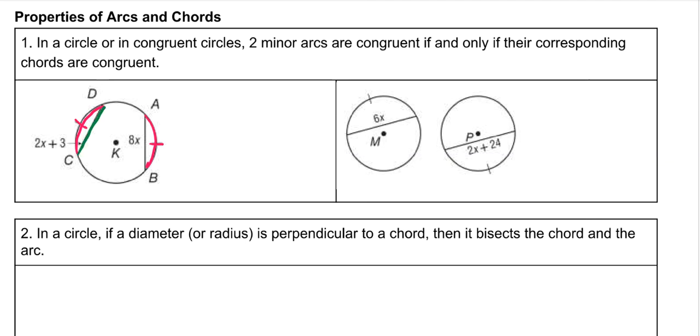their chords are also congruent. So if the chords are congruent to solve this, you set them equal to each other. Here, 6x is equal to 3, divide by 6,